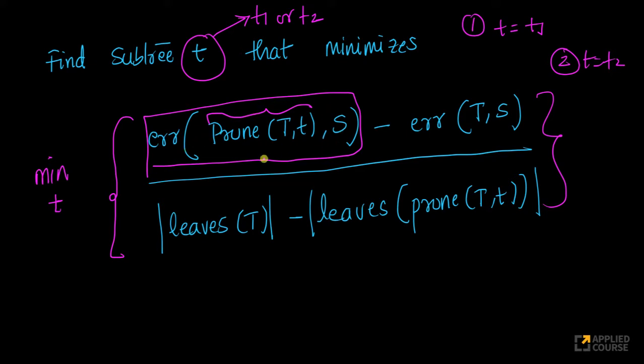So, compute the error on the pruned tree minus the error on the original tree on the same dataset. Now, remember, the pruned tree has larger error. Remember, the pruned T typically has larger error because the non-pruned tree, fully grown tree has lower error because you could have overfit on this dataset S. So, this is larger value, this is smaller value. So, the numerator is always positive or zero sometimes.